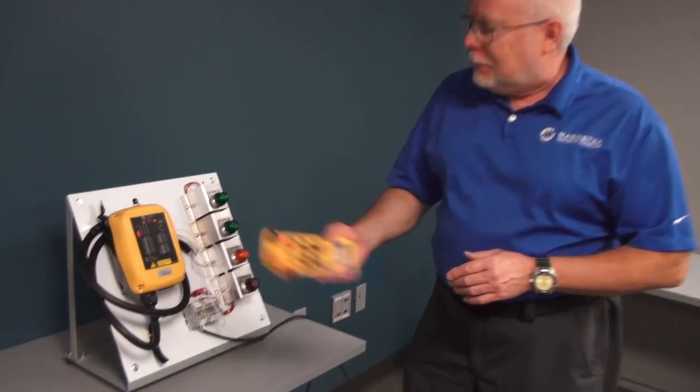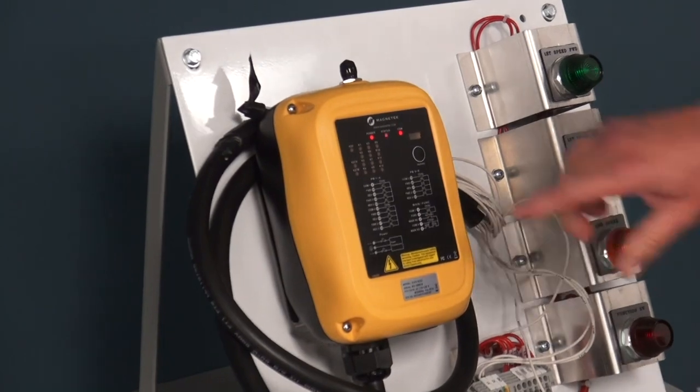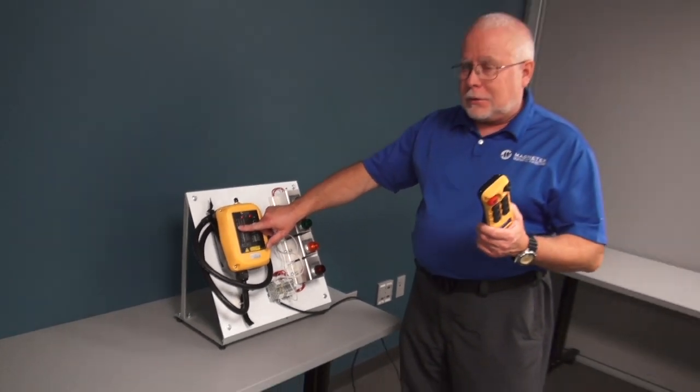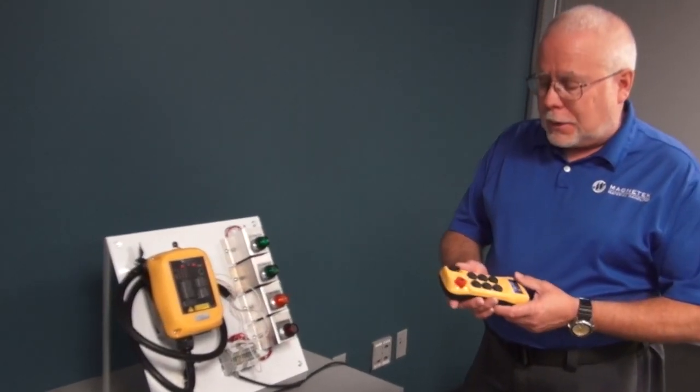So if I shake this hard enough, I have now activated the 0G sensor. There's been no impact to the transmitter, and now the mainline has dropped out.